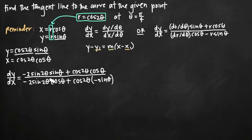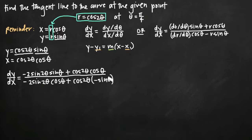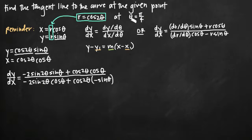The derivative of our original polar function dr/dθ times cosine theta, minus r which is cosine of 2 theta, times sine theta — this matches the second formula exactly. So you can either memorize the smaller polar formula directly, or create equations for y and x and use product rule; either approach works.